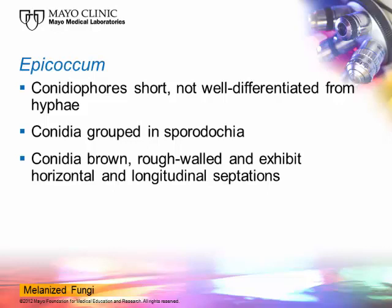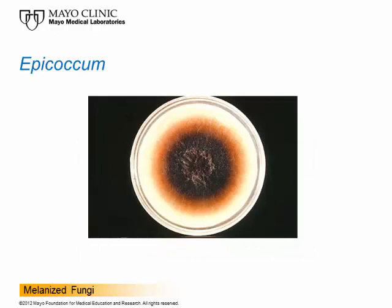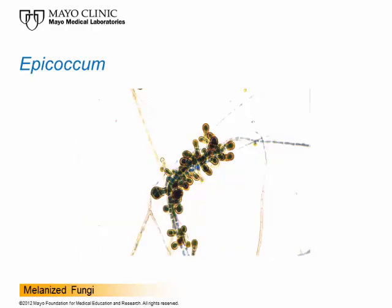Epicoccum conidia form a nest-like cluster where all the conidiophores are grouped together in one spot, forming a structure called a sporodochium. The conidia are brown, rough-walled, with horizontal and longitudinal septations. As they get older, they get crusty-looking. One hallmark of this organism is that it produces an orange diffusible pigment visible on the reverse of the culture, while the culture surface is dark brownish. The canidia are produced in the sporodochium. Epicoccum is an environmental organism that I don't know has ever caused human disease.